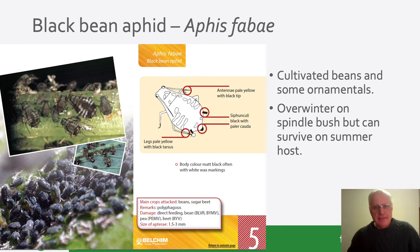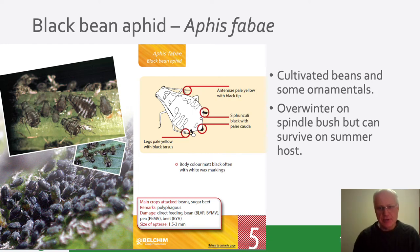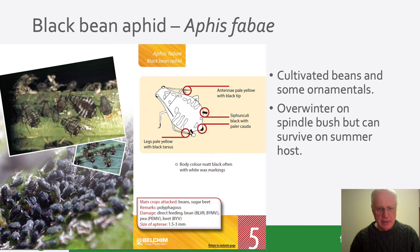Another example is Aphis fabae, the black bean aphid. This one has white wax patches or pale patches showing up on the images. The line diagram shows fairly short antennae that are pale yellow with a black tip, black siphunculae, a fairly black body colour, and white wax markings. Very common on beans and some ornamentals. This species overwinters on the spindle bush — a number of aphid species have complicated life cycles with alternative hosts. In autumn, outside the greenhouse, they form males and females who lay eggs on alternative hosts, overwinter as eggs, hatch in spring, and move back to the summer hosts.